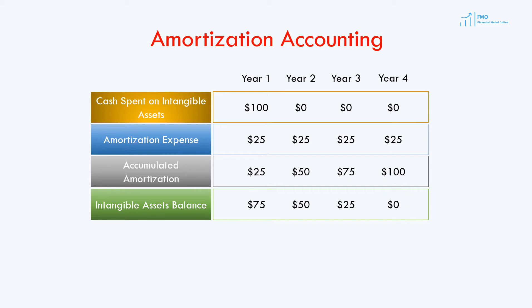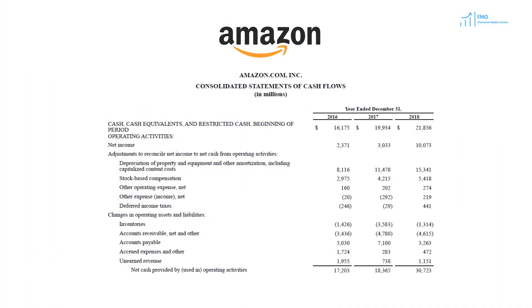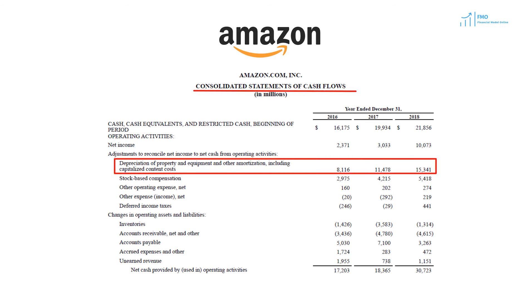Let's now take a look at how amortization expense is reported in Amazon's 10K report. Typically, amortization expense appears in SG&A and is not reported separately on the income statement. However, amortization expense is reported on the cash flow statement, usually together with depreciation expense.